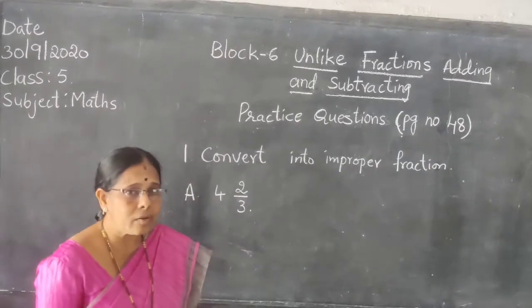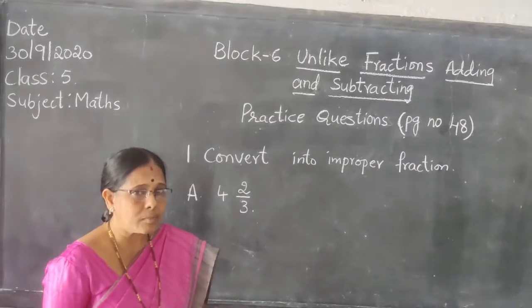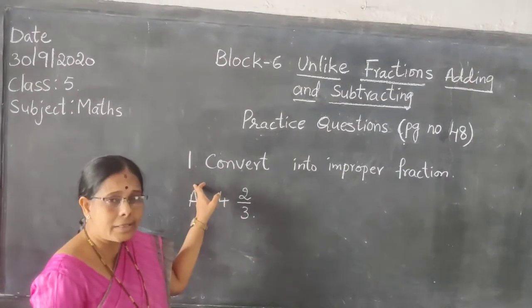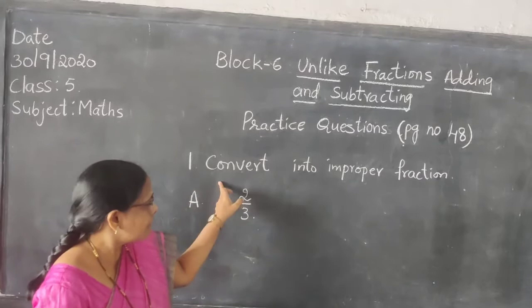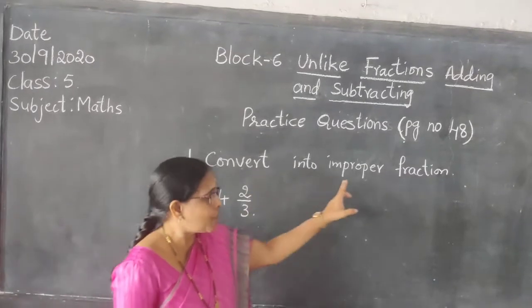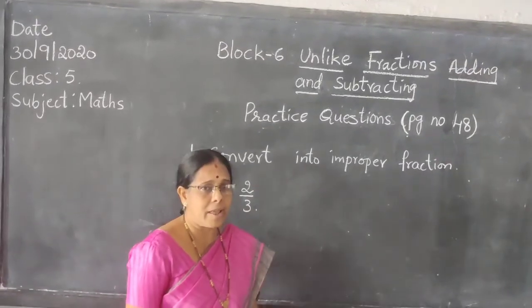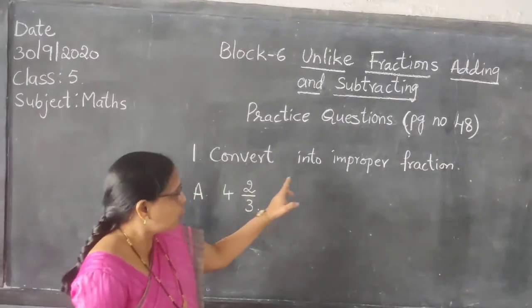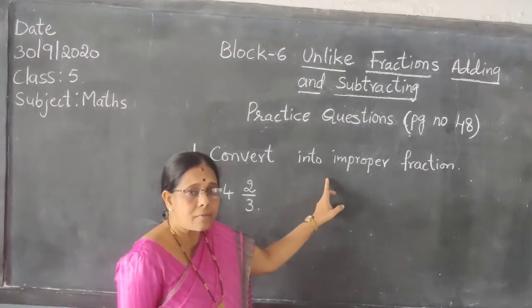Each bit I will explain one more with some children. So the first bit is: convert into improper fraction.